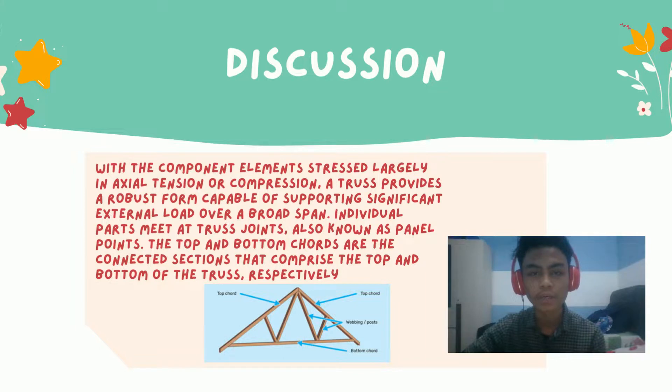Hello, my name is Muhammad Ali Farhan and my matrix number is AA211882. For my part, I will talk about discussion about our topic. With the component elements stressed largely in axial tension or compression, a truss provides a robust form capable of supporting significant external loads over a broad span. Individual parts meet at truss joints, also known as panel points. The top and bottom chords are the connected sections that comprise the top and the bottom of the truss, respectively. That's all from me. I will pass to the next presenter. Thank you.